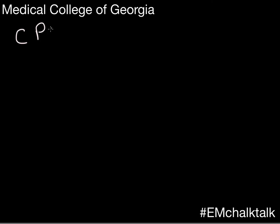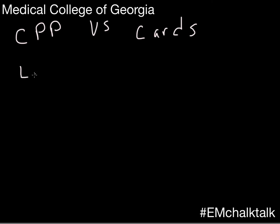One of the questions we had before was which patients should go on the chest pain pathway versus being admitted to cardiology. Chest pain pathways are observation unit-based algorithms for evaluating chest pain patients coming into the emergency department. They are supposed to be for low-risk chest pain patients, meaning they have a low risk of acute MI — less than 5% — and less than 10% for unstable angina.